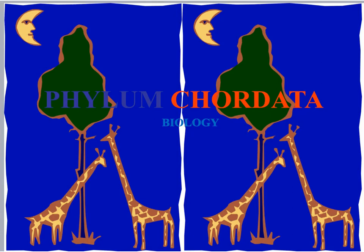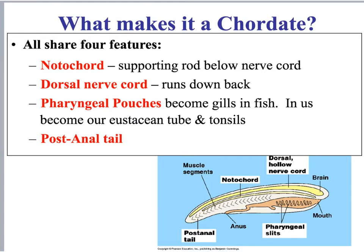In this lecture we will go over all of the important features that designate and differentiate phylum Chordata from other animal phyla. Chordates share the following features: they have a notochord, which provides support for the nerve cord; a dorsal nerve cord that traverses down the back; pharyngeal gill pouches, which in us become our Eustachian tube and tonsils but in fish become their gills; and a post-anal tail.